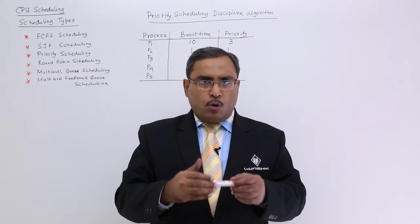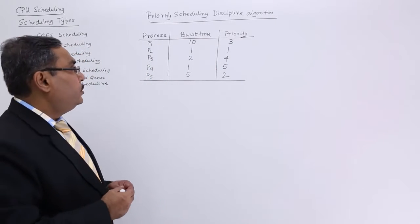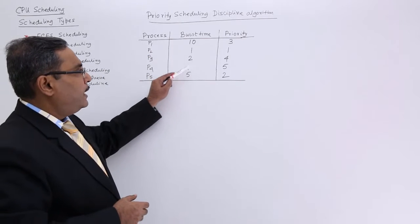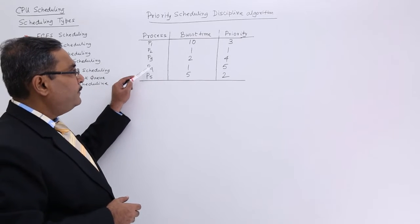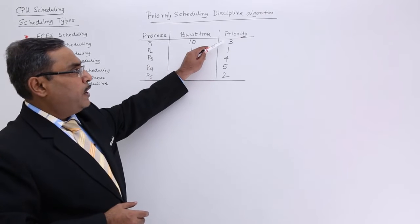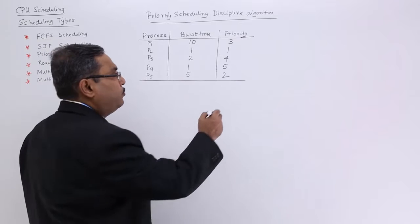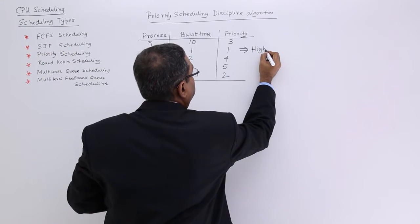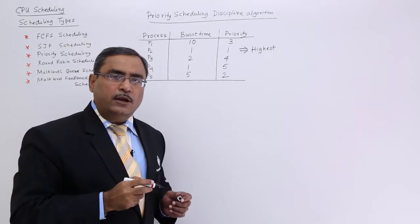So, to explain more regarding this priority scheduling, let us go for a such numerical problem. Here we are having three columns, process, burst time, and the priority. Processes are ranging from P1 to P5. Burst times are 10, 1, 2, 1, 5, and priorities are 3, 1, 4, 5, 2. Here, priority 1 will be treated as the highest priority. And priority 5, in this case, will be the lowest priority.